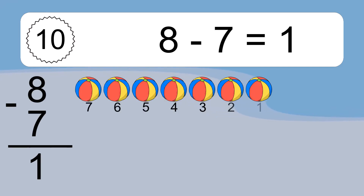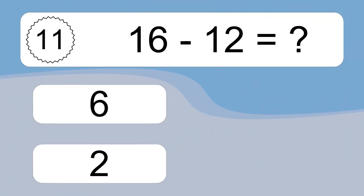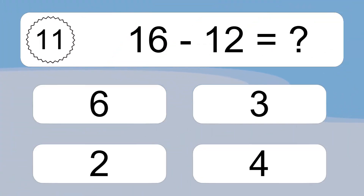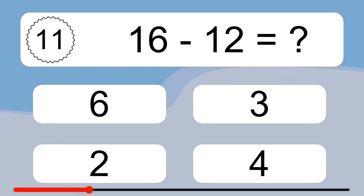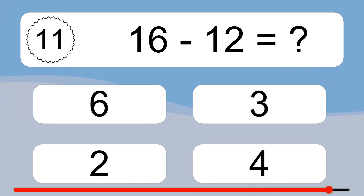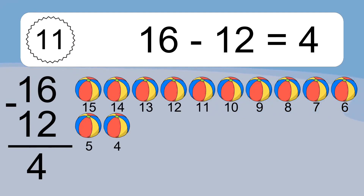8 minus 7 equals what? 8 minus 7 equals 1. Let's count it. 7, 6, 5, 4, 3, 2, 1.